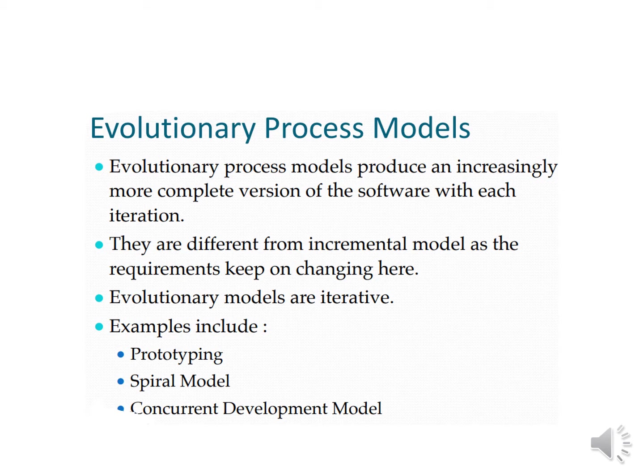Evolutionary process models produce an increasingly more complete version of software with each iteration. In the evolutionary process model, there are a number of iterations present. For the project, a number of levels are defined, and for every level the iterations are defined. These are different from the incremental model as the requirements keep on changing.